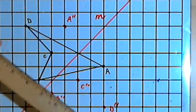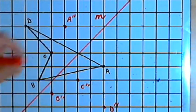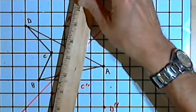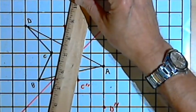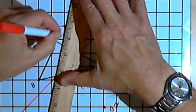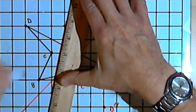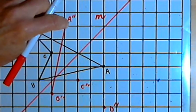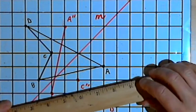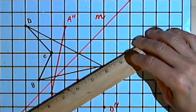Let's connect these points. So let's see, I've got A double prime and B double prime. And then B double prime to C double prime.